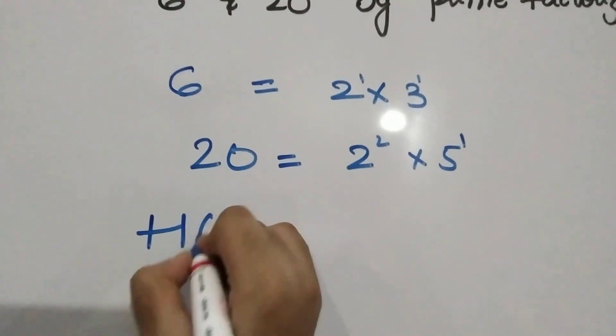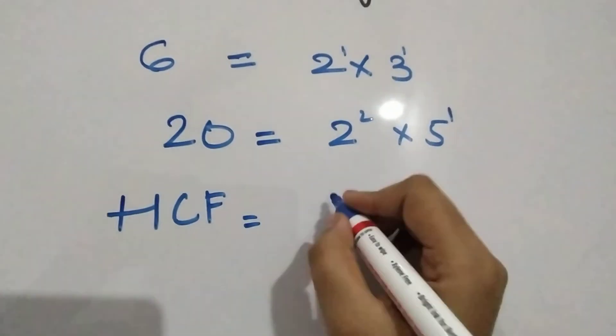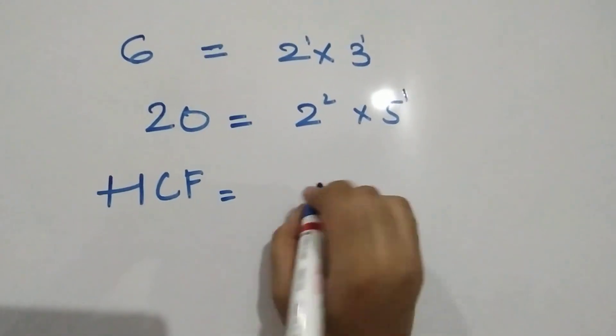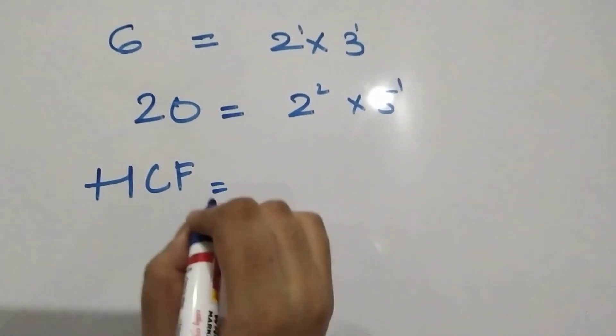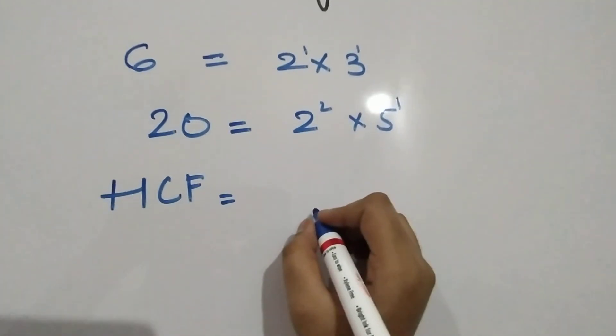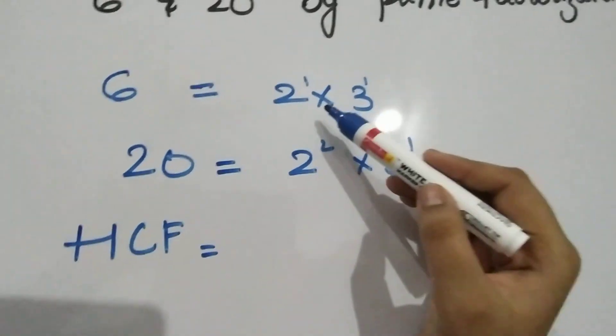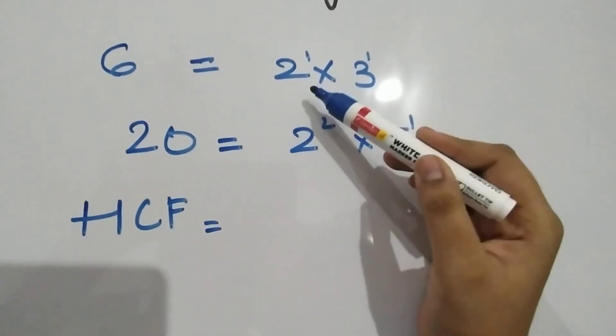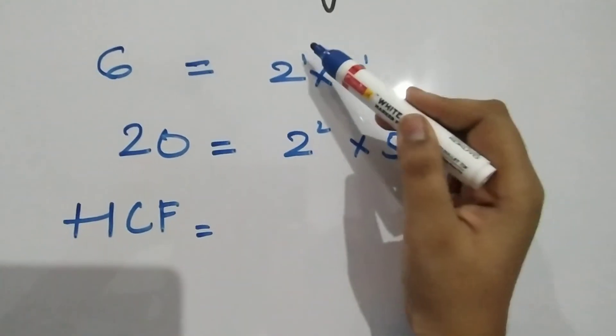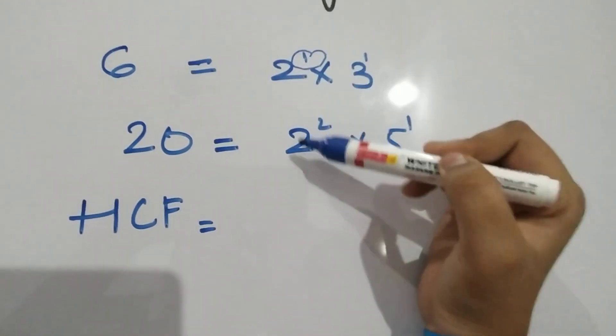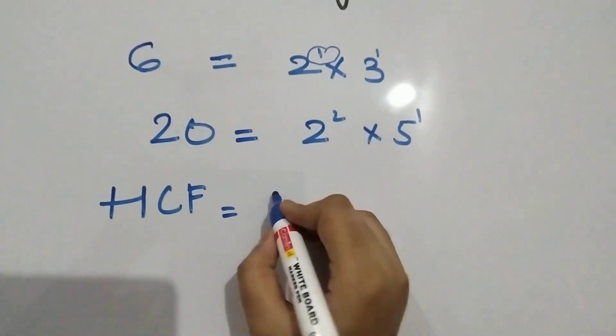So what is HCF? HCF is the product of smallest powers of common prime factors of the numbers. So here the common numbers are 2 and 2 and the powers are 1 and 2. So the smallest power is 1 and HCF will be 2.